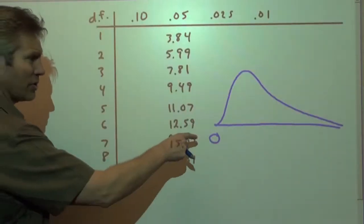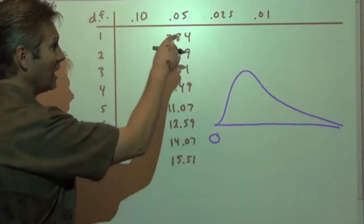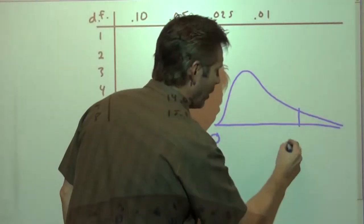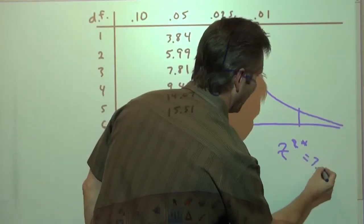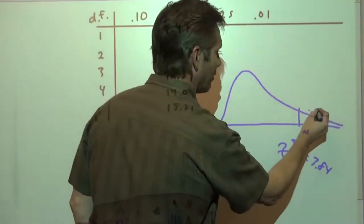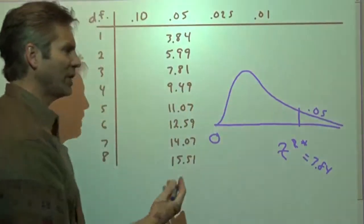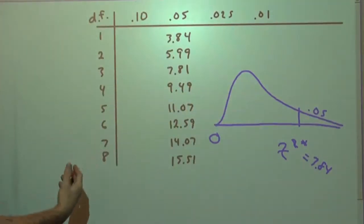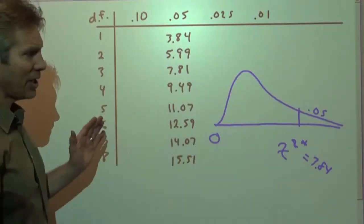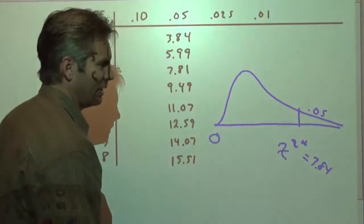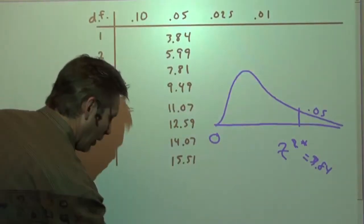So in these chi-squared distributions, 0 is the smallest number you can get. If you go to the table, you'll find that if you get a critical chi-squared value of 3.84, that means that only 5% of the time due to chance, when there really isn't a difference in the distribution, 5% of the time, just due to random chance, you'll get a value bigger than 3.84.